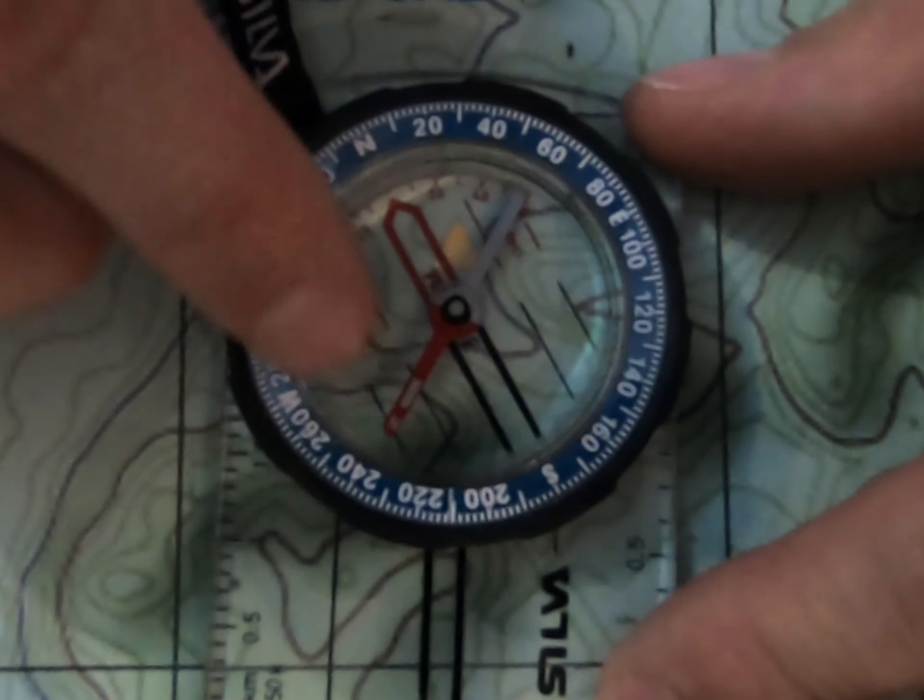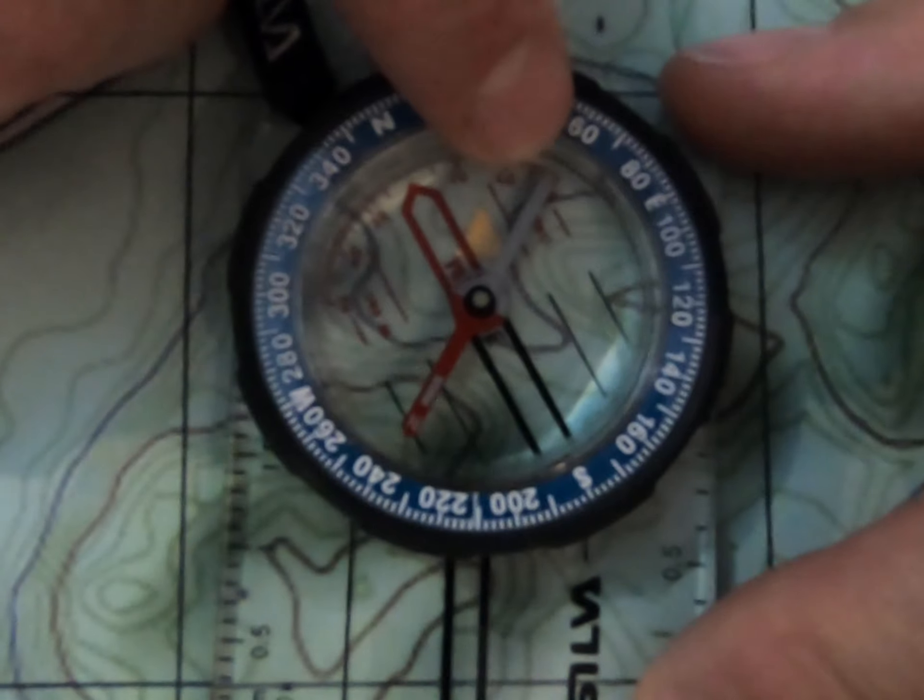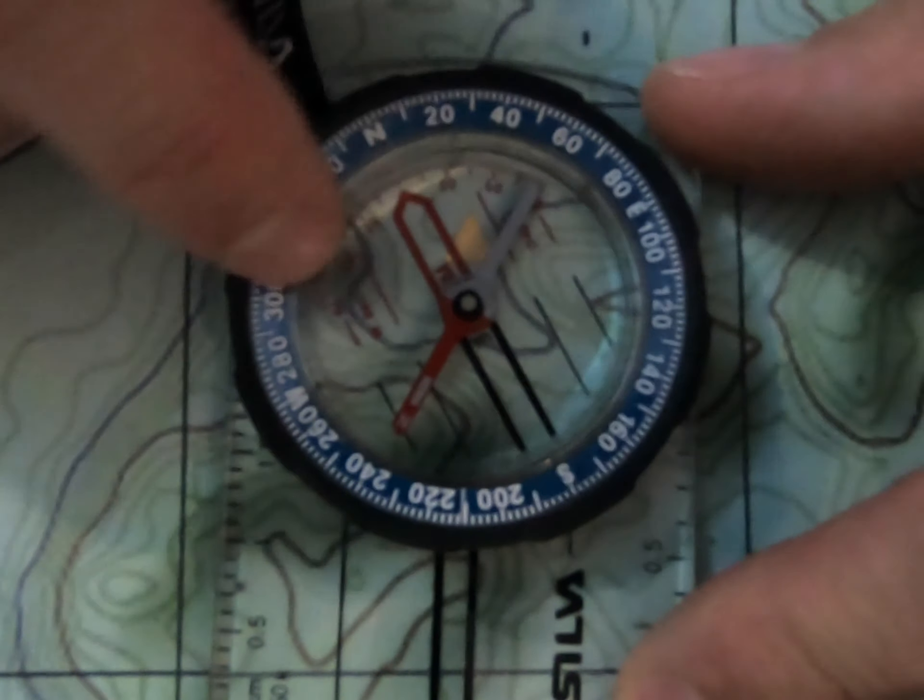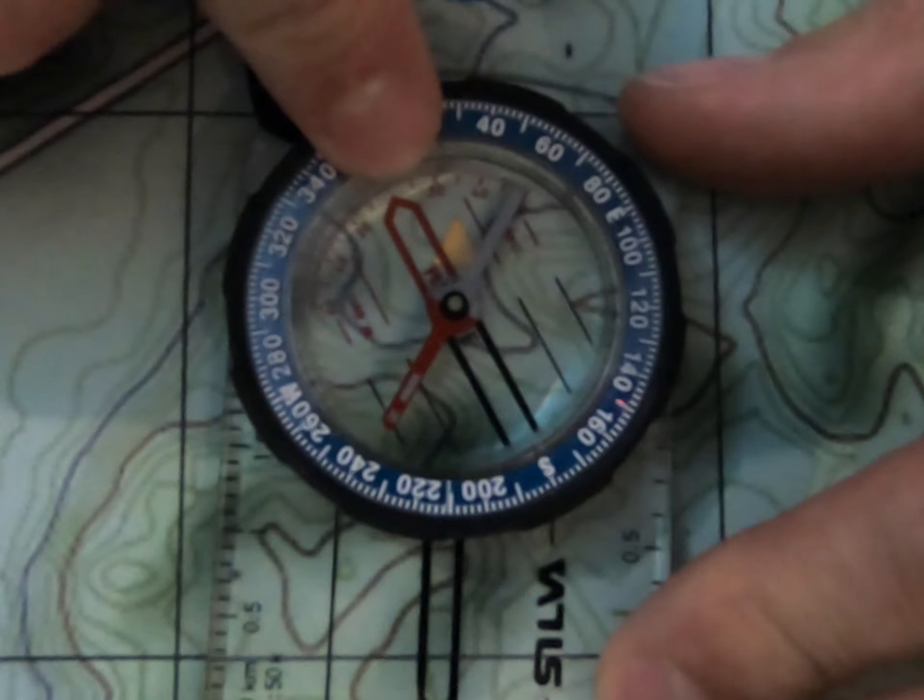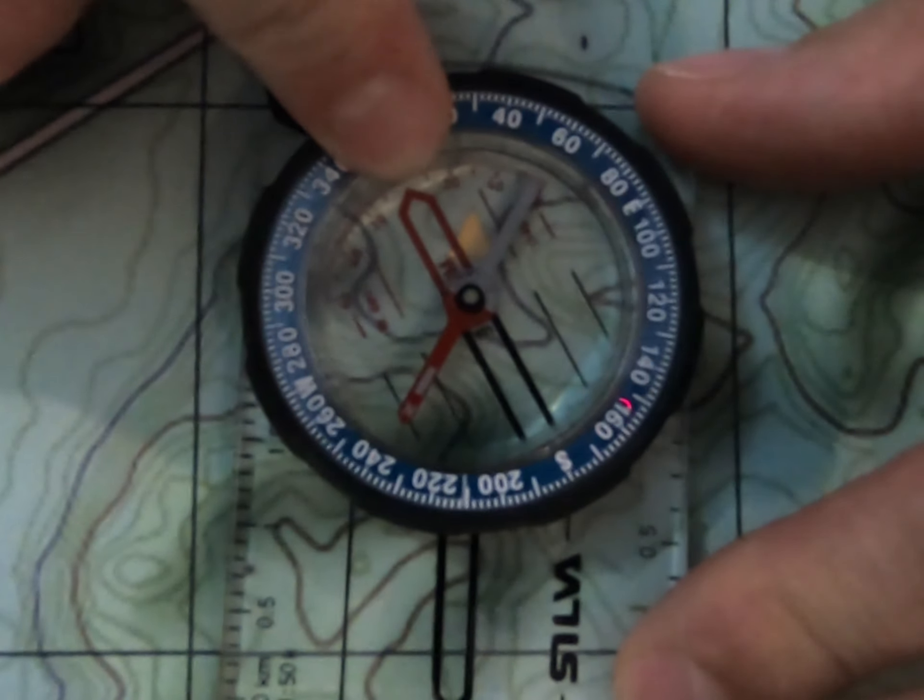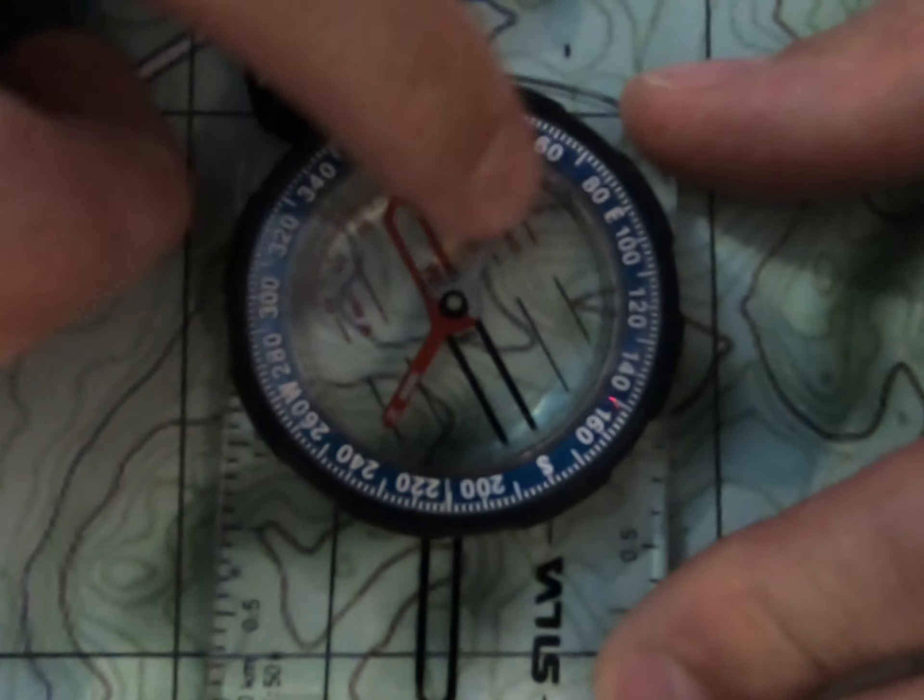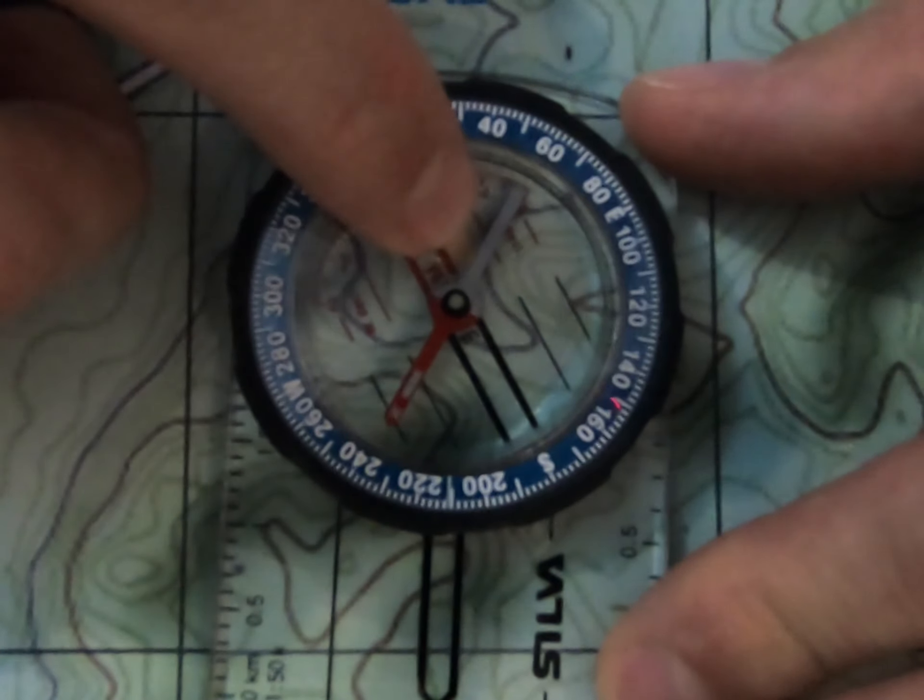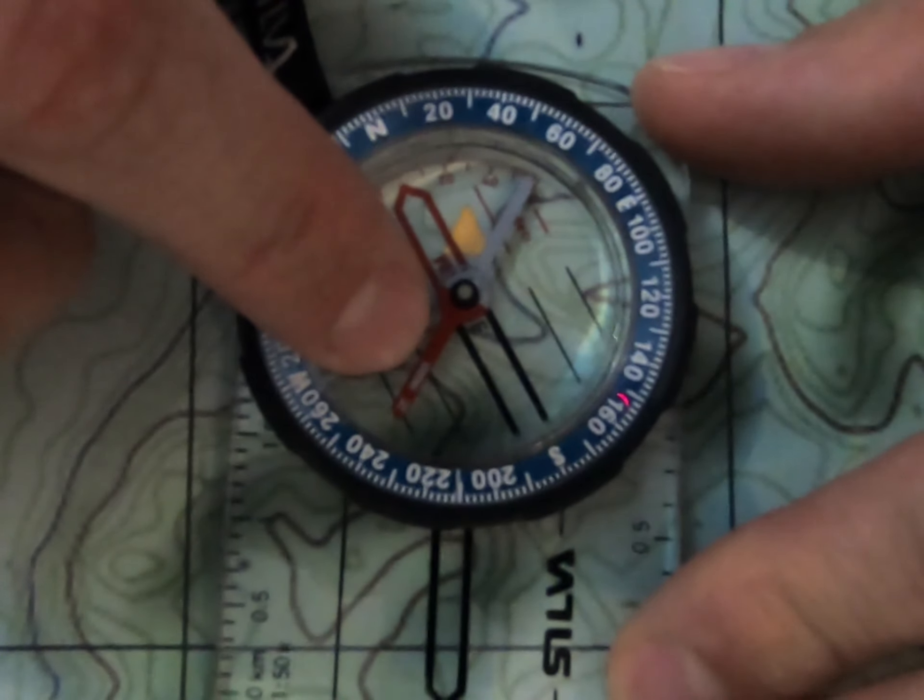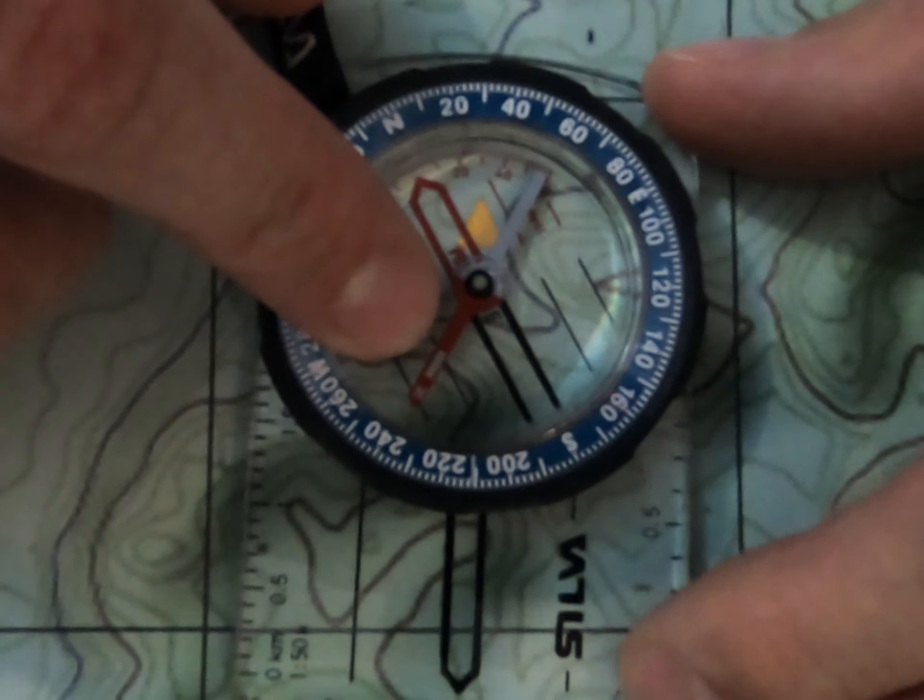And on the inside of that, we have our orientation lines. So these are the black and red lines on the inside, as well as the black and red arrow, which is our orientation arrow. And just in there as well is our north-south needle. So this is our magnetic needle that always points magnetic north.